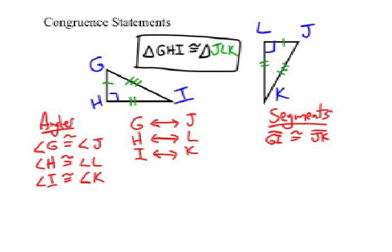So, segment HI is congruent to LK. And finally, segment GH is congruent to which one? JL.